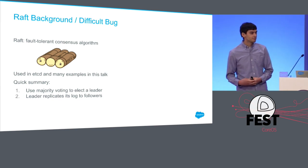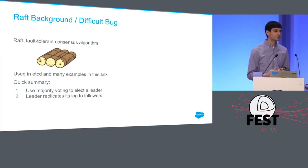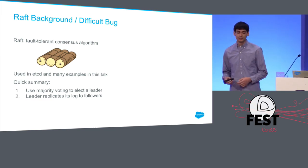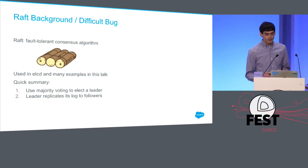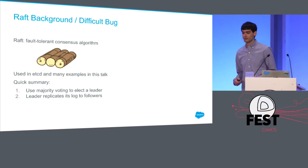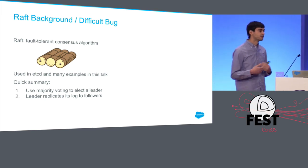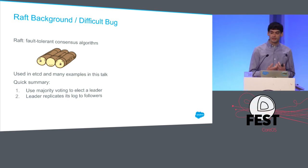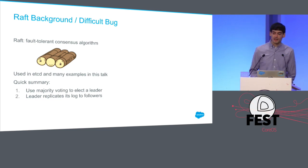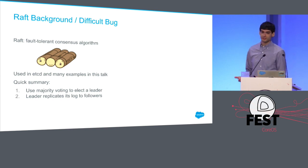Raft is a fault-tolerant consensus algorithm. Hopefully you've heard of it by now — it's pretty widely used. It's used in etcd by CoreOS, one of the very early adopters. It really motivates this work because as I was working on it, I wish I had some of the tools I'm working on now in Runway. Raft is split into two parts: leader election, where the cluster uses a majority voting algorithm to elect a leader with randomized timeouts, and then normal operation where the leader replicates its log out to followers.